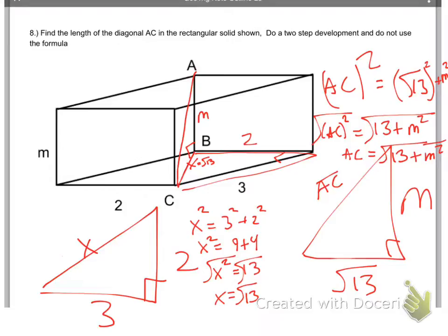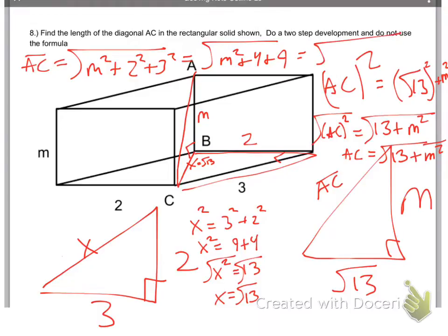But wait, for three easy payments, you can also then say hey there was an easier way to do this. Obviously it was to use the formula we just had, right? So that means that AC, that line segment, is just the square root of M squared plus 2 squared plus 3 squared. 2 squared is 4, 3 squared is 9, plus 9 which equals 13. So we end up with the square root of M squared plus 13, which is what we found the first time. Remember 13 and M squared can be switched around because of the associative property.